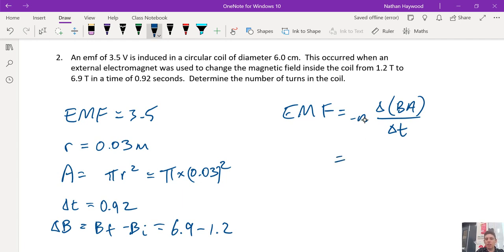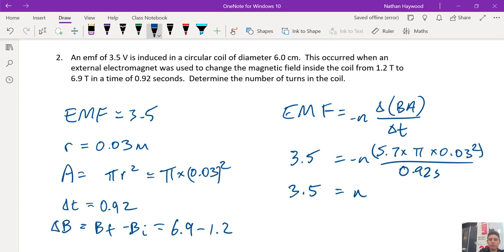So we need the number of turns. We don't know what that is. So we sub everything in and rearrange. And divide that by the time in seconds. So that number, so 3.5 divided by that big number there gives you the number of turns.